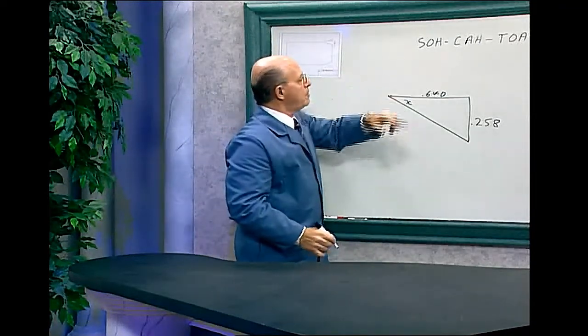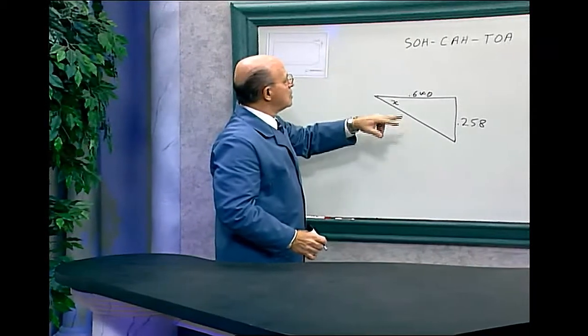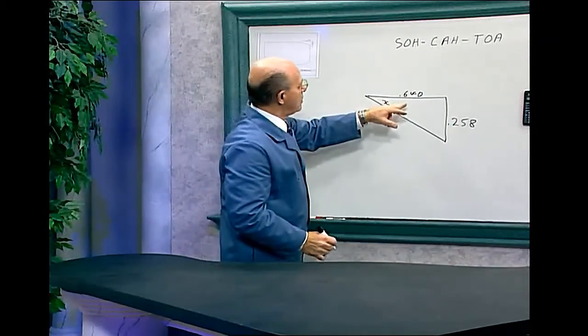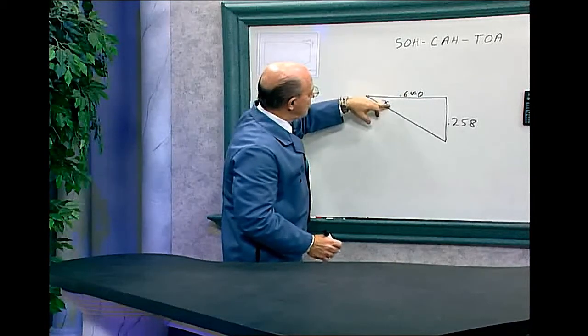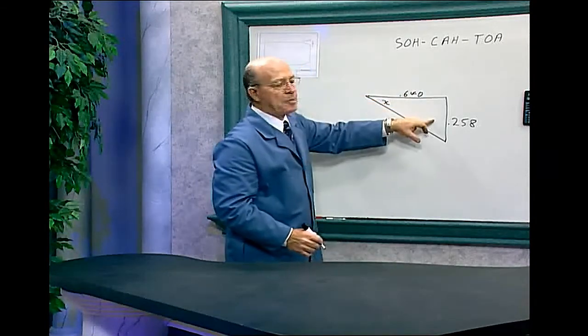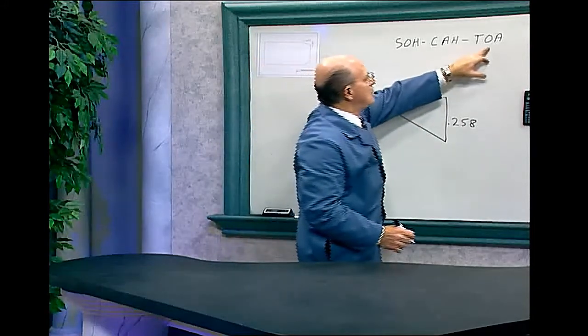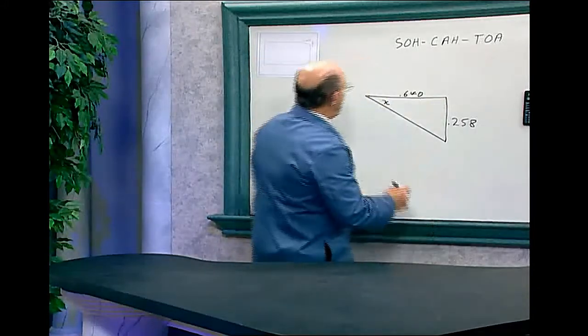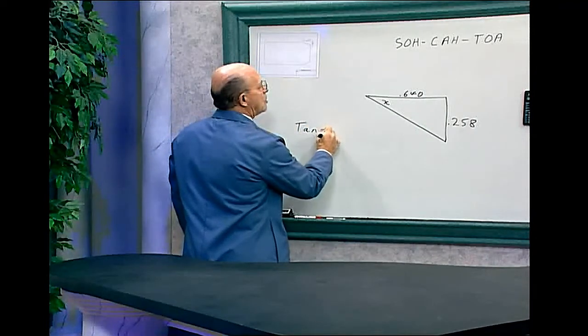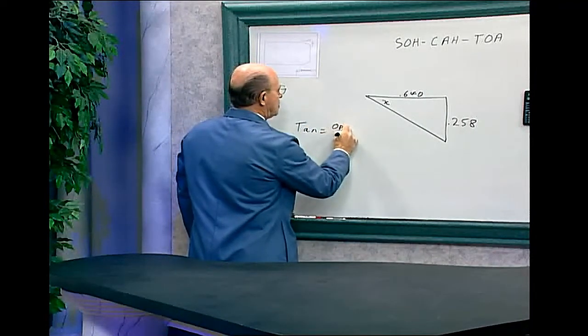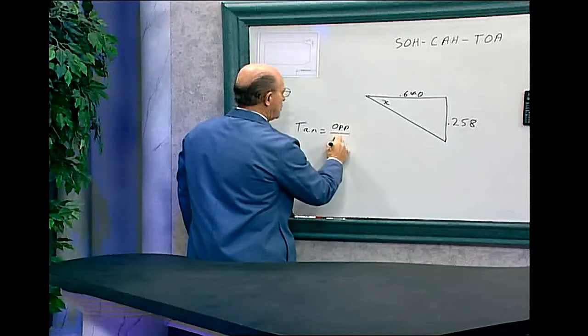So, SOHCAHTOA, where do we have an adjacent, it's adjacent to the angle that we want to find, an opposite. Adjacent and opposite is tangent equals opposite over adjacent.